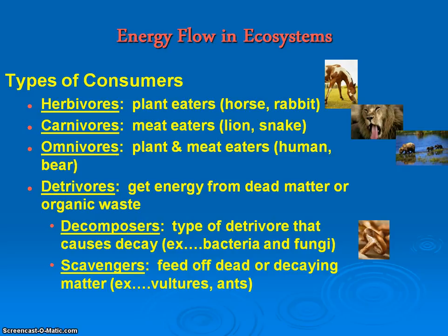Now our detritivores are going to include our scavengers and decomposers. Scavengers are a little different — they're going to be mainly just animals, whereas our decomposers are going to be our bacteria and fungi kingdom. Scavengers are not necessarily going to help break down organic matter the same way that bacteria and fungi would. They're going to feed off of it, and then their waste product can then be broken down by the decomposers.